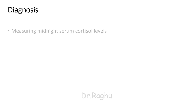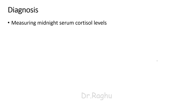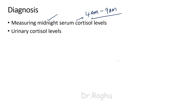To diagnose Cushing's syndrome, we can measure midnight serum cortisol levels. Cortisol follows a circadian rhythm with maximum secretion between 4 a.m. and 9 a.m.; at midnight, cortisol levels are normally very low. In Cushing's syndrome, midnight serum cortisol levels will be elevated. We can also measure urinary cortisol levels, which will also be higher. Another test is the dexamethasone suppression test — dexamethasone is a synthetic steroid that should suppress ACTH and hence cortisol levels; if suppression does not occur, it indicates Cushing's syndrome.